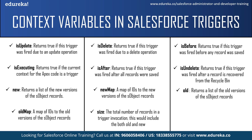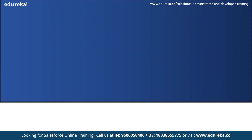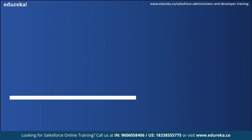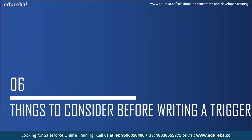Finally, the size context variable returns the total number of records in a trigger invocation, including both old and new. So those were the context variables in Salesforce. Now let us move on to the things to consider before implementing a Salesforce trigger.